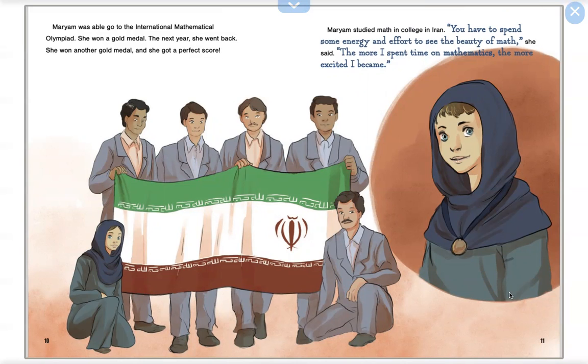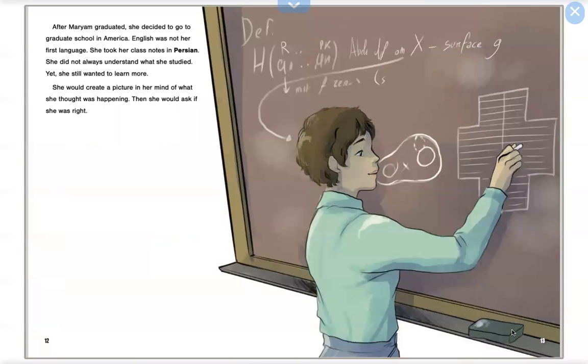After Maryam graduated, she decided to go to graduate school in America. English was not her first language. She took her class notes in Persian. She did not always understand what she studied, yet she still wanted to learn more. She would create a picture in her mind of what she thought was happening. Then she would ask if she was right.